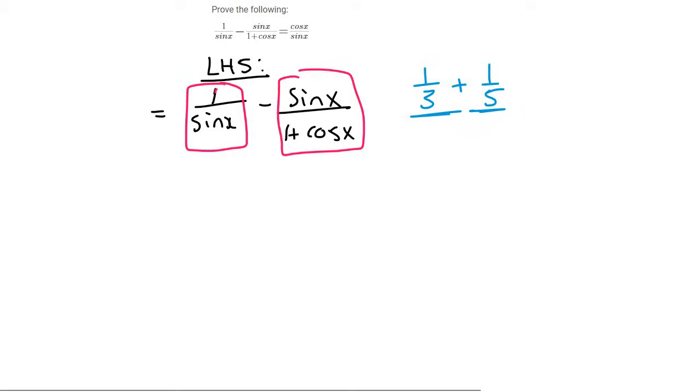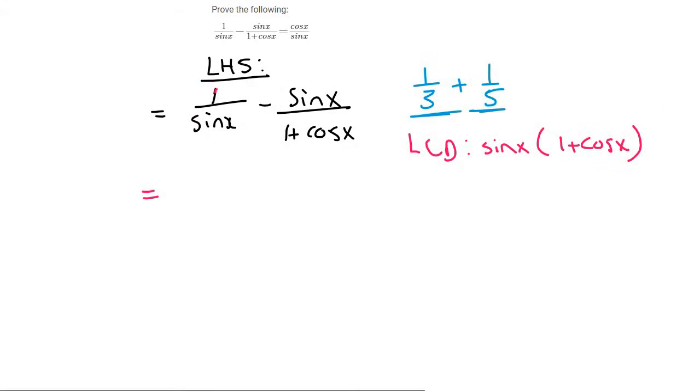So we're going to need a common denominator here and the common denominator, the LCD, is just going to be sin x and then 1 plus cos x like that. And so what this means is that we're going to have to multiply the 1 plus cos x with this one and then the sin x with this sin x.